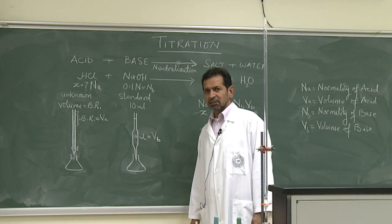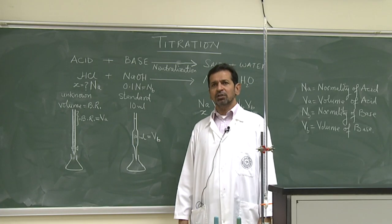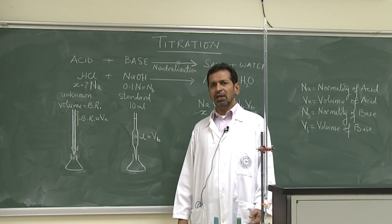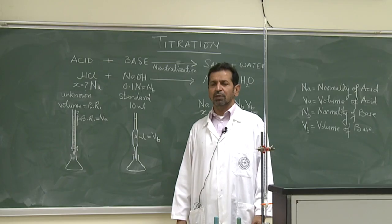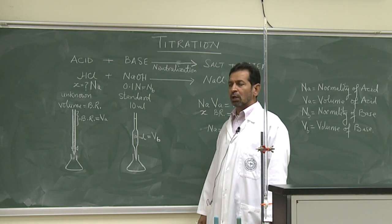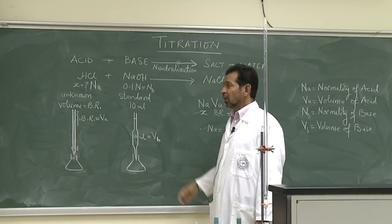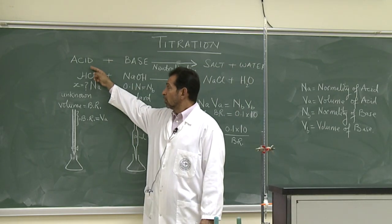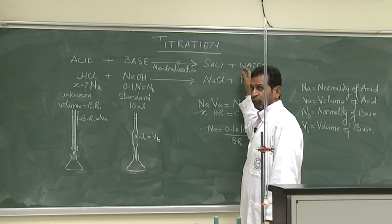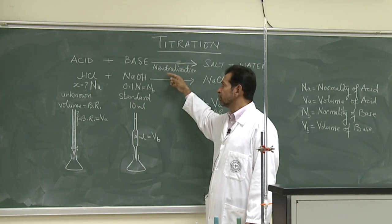Titration is a special technique by which we can determine the concentration of an unknown solution of acid or base by neutralizing it against a standard solution of acid or base. In this titration, we will use a reaction called neutralization — a reaction in which an acid reacts with a base to form salt and water. Whenever an acid reacts with a base, it always produces salt and water. That is called neutralization.